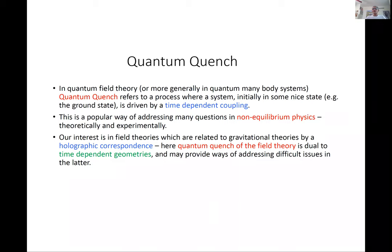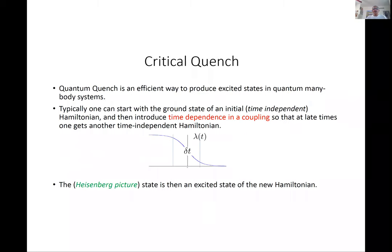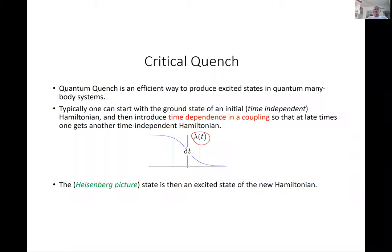In the holographic correspondence, the quantum quench of the field theory becomes dual to time-dependent geometries, which may provide ways of addressing difficult issues. This is an efficient way to produce excited states in quantum many-body systems. Typically one starts with the ground state of an initial time-independent Hamiltonian, and then has a time-dependent coupling lambda(t) — in the Heisenberg picture — that takes the system to another time-independent Hamiltonian. The state is obviously not the ground state of the new Hamiltonian; it is a complicated excited state.